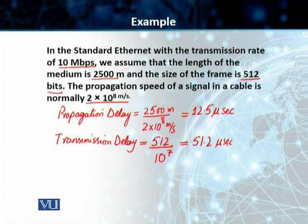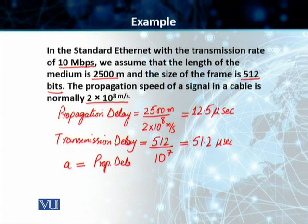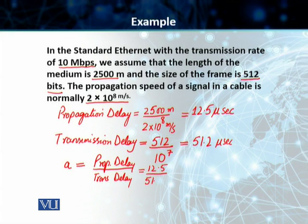Now that we have both the propagation delay and the transmission delay, we can find the value of 'a'. 'A' is the number of frames that can fit on the medium, calculated as propagation delay divided by transmission delay: 12.5 microseconds divided by 51.2 microseconds gives a value of a = 0.24.